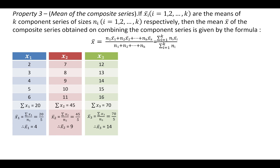Now let us calculate the arithmetic mean of the combined series using the formula we have just studied. Using the formula of property 3, we get x̄ = 135 / 15, which equals 9.